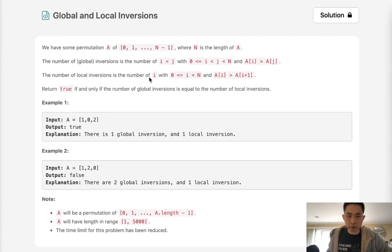The number of local inversions however is where A[i] is greater than A[i+1]. So here we can see that one is the only global inversion because it's greater than zero and that's the same as the local inversion because they're right next to each other.